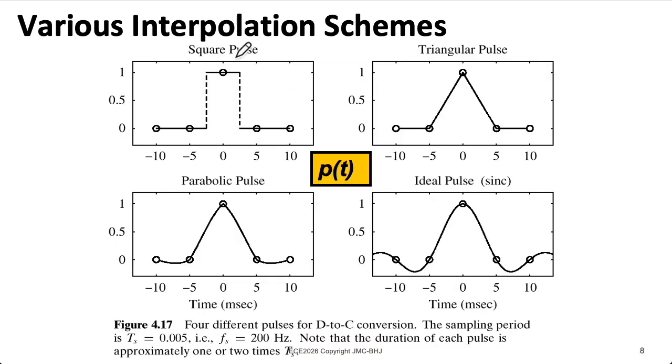So the pulse corresponding to a zero-order hold is shown here in the upper left. If we instead use this triangular pulse that goes from minus Ts to Ts, that would correspond to linear interpolation. Now, there is an ideal pulse that would perfectly reconstruct your signal from the samples. That's called a sinc function.